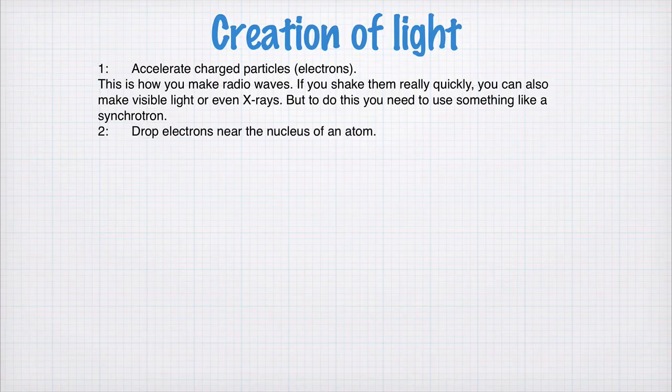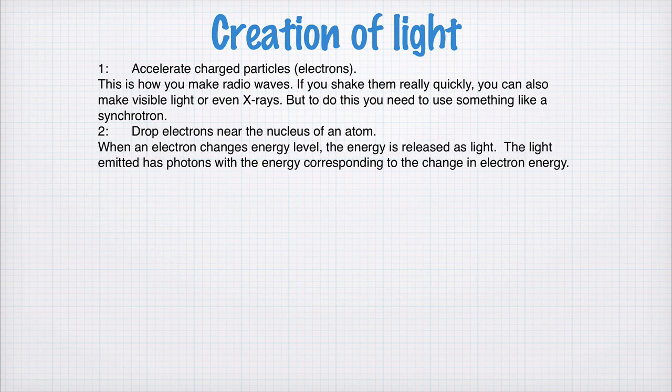A second way of making electromagnetic radiation is to drop electrons near the nucleus of an atom. This is more of a quantum picture of how light is created. In atoms, the electron energy levels are quantized. There are certain allowed energy levels that the electrons can occupy. When an electron goes from a high energy state to a low energy state, the difference in energy is released as a photon. And the photon emerges with the energy corresponding to the change in electron energy.